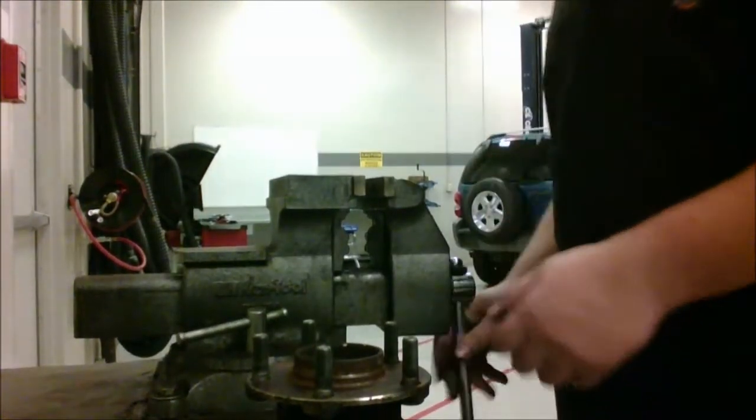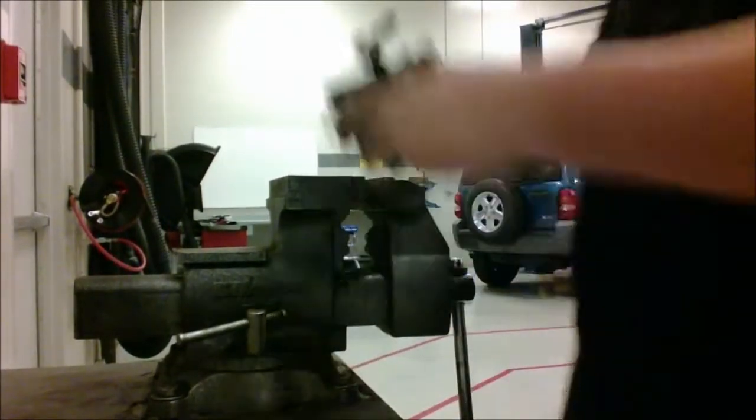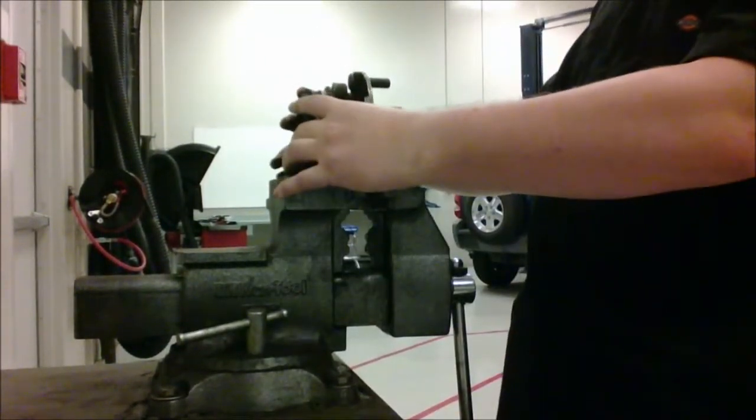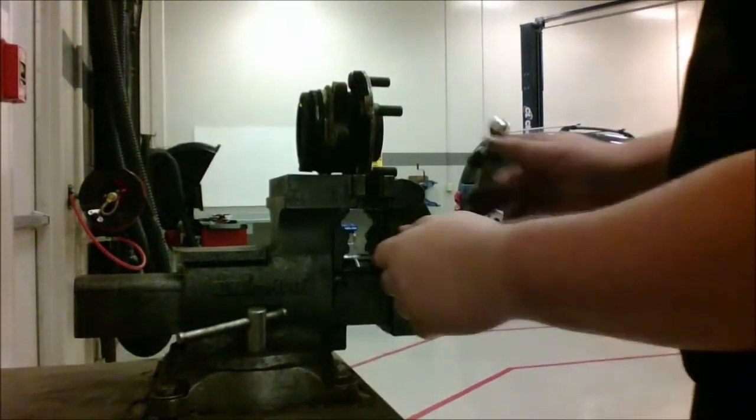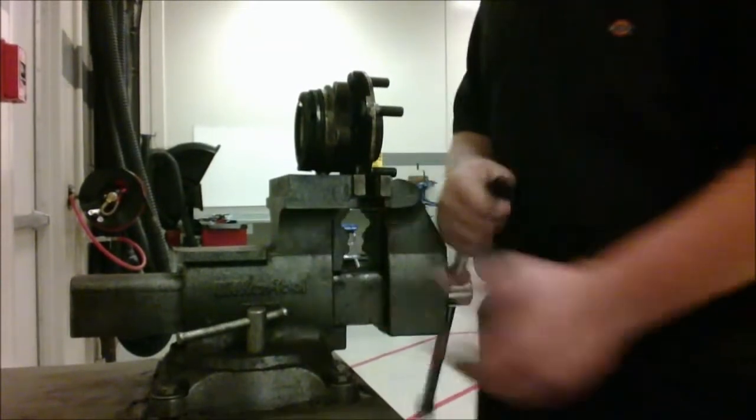So first, what you want to do is get the desired lug stud, so we just got to pick one. We're going to place it in here, and we're going to tighten it down. Now we're tightening it down so that when we hit the lug stud out, it doesn't move.